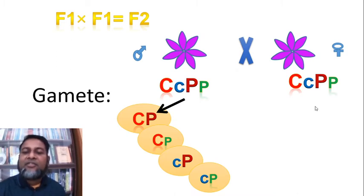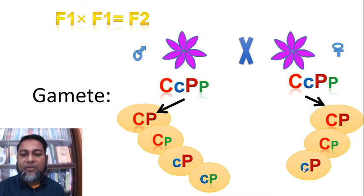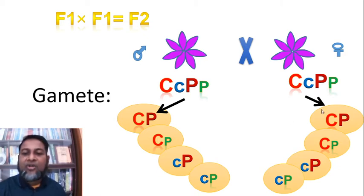On the other hand, female gametes are also four types: capital C capital P, capital C small p, small c capital P, and small c small p. We see that four types of male gametes are like four types of female gametes. This is the checkerboard, with four types of female gametes along one axis.